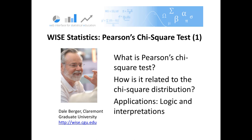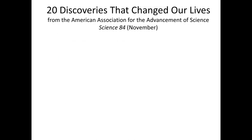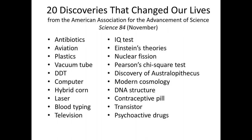I'd like to start with some background. Toward the end of the last century, the end of the 1900s, the American Association for the Advancement of Science published an article on the 20 discoveries that changed our lives — those that had the greatest impact in the last century. It's an impressive list: antibiotics, aviation, plastics. There's one item on this list that really caught my attention: Pearson's Chi-Square Test.